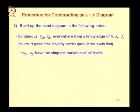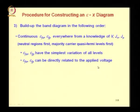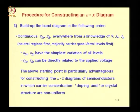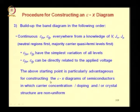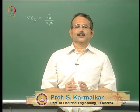The reason to start with Efn and Efp is that they have the simplest variation of all levels. Another reason is that Efn and Efp can be directly related to the applied voltage V. This starting point is particularly advantageous for constructing Ex diagrams of semiconductors in which carrier concentration, doping, and/or crystal structure are non-uniform.